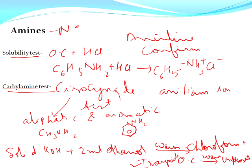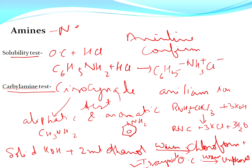The reaction for the carbylamine test is: RNH2 + CHCl3 + 3KOH → RNC (isocyanide) + 3KCl + 3H2O. This is the carbylamine test. These are all the tests covered in this video. Please like and subscribe the channel, comment below with your doubts, and share as much as possible. Thank you and have a nice day.